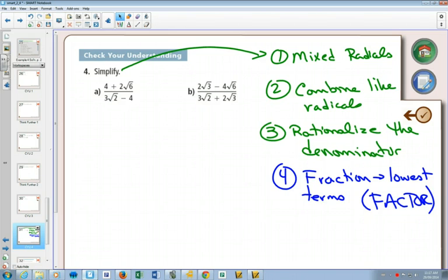So looking at this right now, we've got the root 6. We've got the root 2. We check. Are those lowest terms mixed radicals? Yes. So that part's good so far.